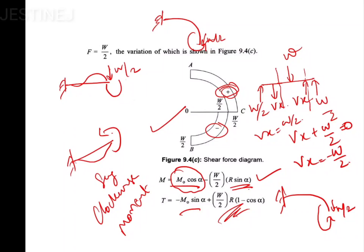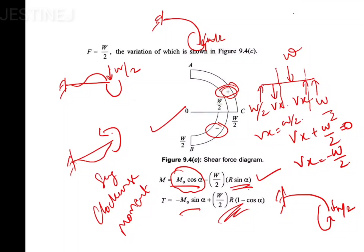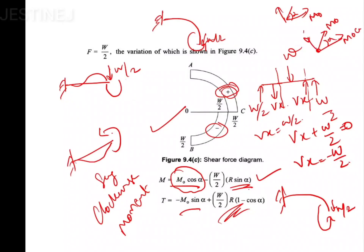Don't confuse the sign convention of M0·cos(alpha) and M0·sin(alpha). Think of M0 as a force vector at angle alpha: M0·cos(alpha) and M0·sin(alpha) act in different directions. That's the case you can consider very easily.